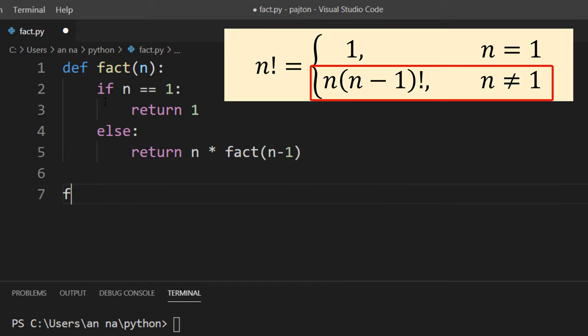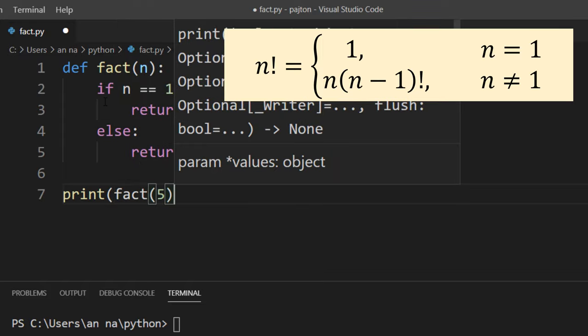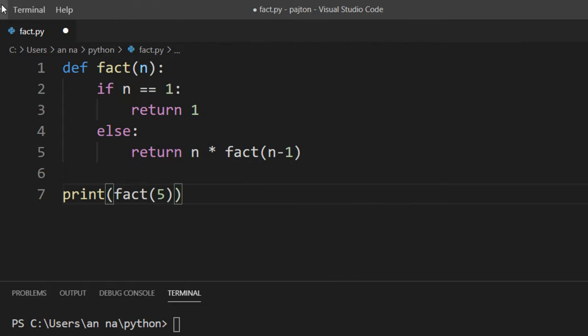And that's it. Let's try to find factorial of a number 5 for example, and let's try to print our result. Let's run this code.